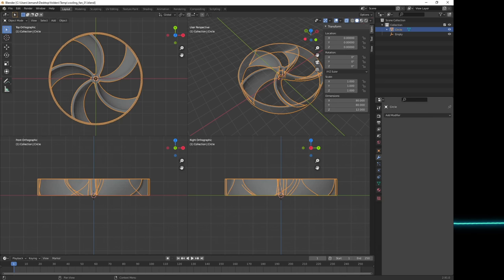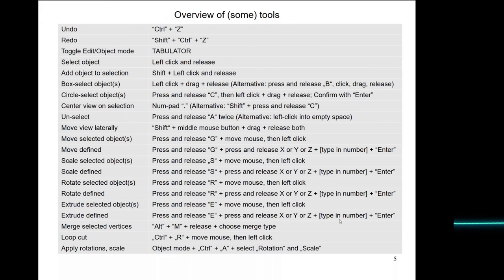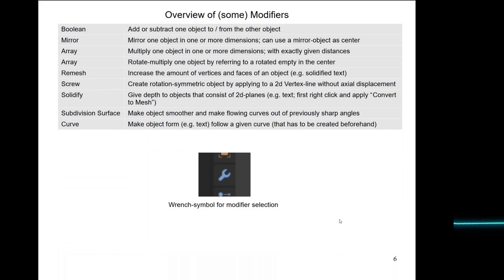With these examples and the table of tools and modifiers, you should be able to create a lot of things for hobby and maker purposes. You can also import 2D forms created in Inkscape, or work with text and wrap it around objects — which is quite difficult to do with dedicated construction programs. Thank you, and I hope there's still time for questions.